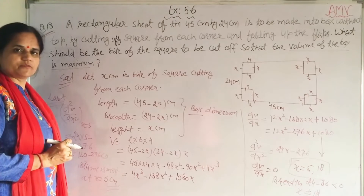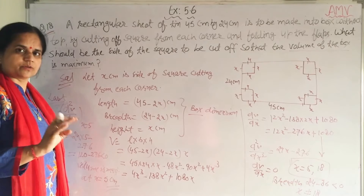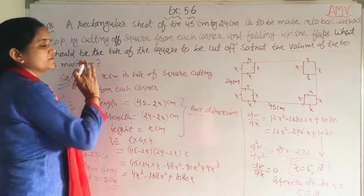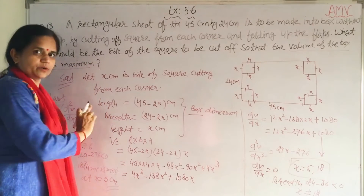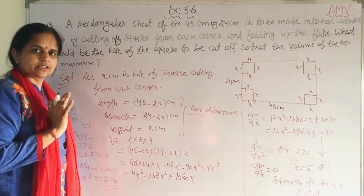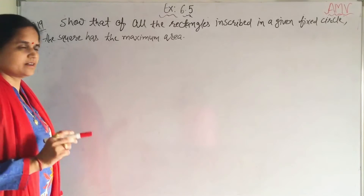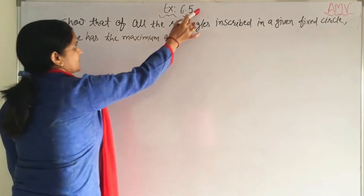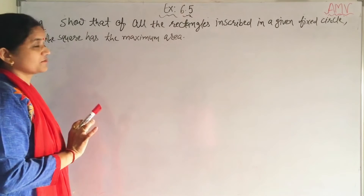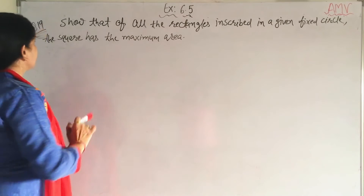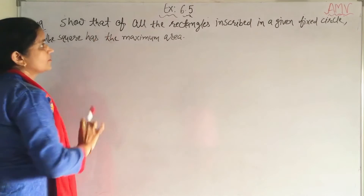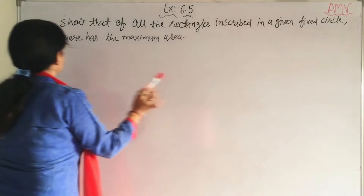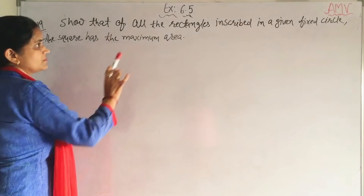Now move to question number 19 of exercise 6.5. Note: in the previous question I mistakenly wrote 5.6, but it is also from 6.5. The question is: show that of all rectangles inscribed in a given fixed circle, the square has the maximum area.